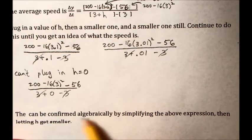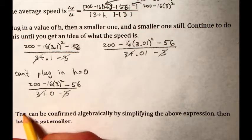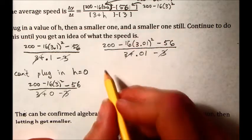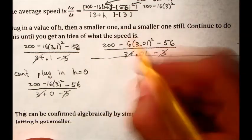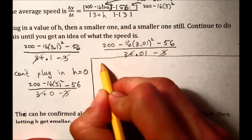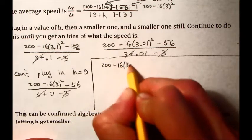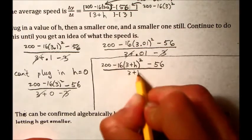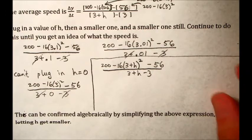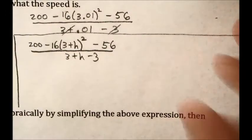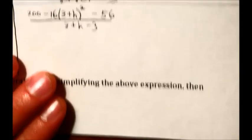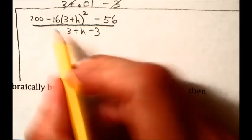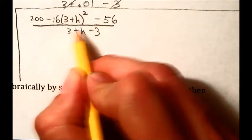So what we do instead is we set it up with the h in it and we simplify it. We don't use a number. This can be confirmed algebraically by simplifying the above expression and letting h get smaller. So imagine if we didn't bother with 0.1 or 0.01 but we did something like this instead. Let's put in that 200 minus 16 times (3 plus h)² minus the 56 all over 3 plus h minus 3 and we started to simplify it. This, by the way, is called the difference quotient. It's mentioned in pre-calc early in the year and then later, much later in the book. Let's work this all out. So we know the 200 minus the 56 gives us 144. This part needs to be foiled out. The bottom is pretty simple, it's just h when you cancel the threes.